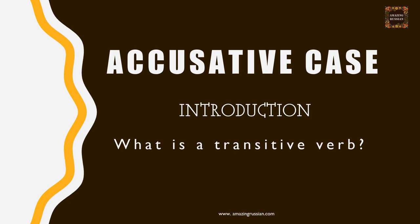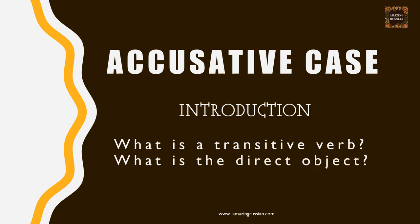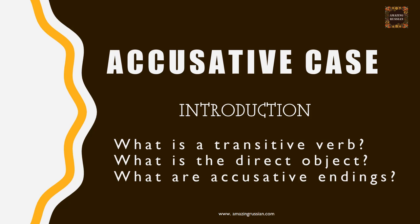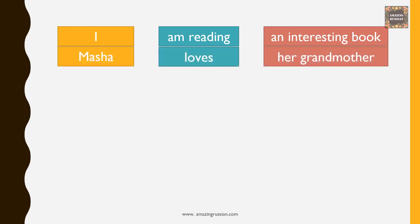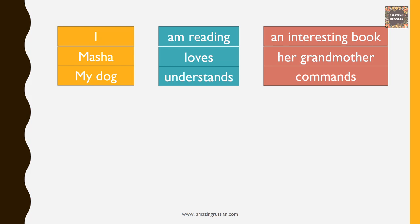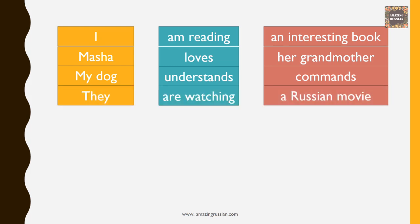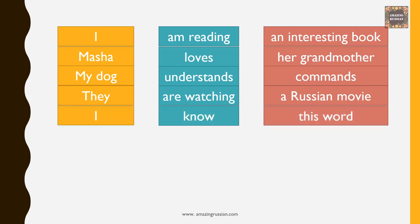What is a transitive verb? What is the direct object? What are accusative endings? I'm going to start with some English sentences: I am reading an interesting book. Masha loves her grandmother. My dog understands commands. They are watching a Russian movie. I know this word.